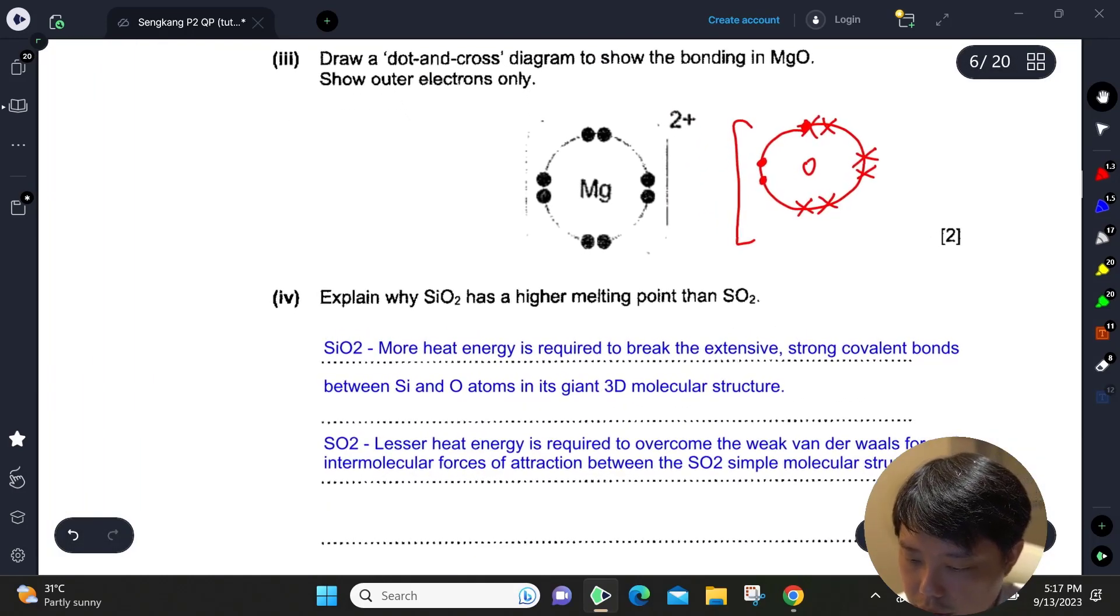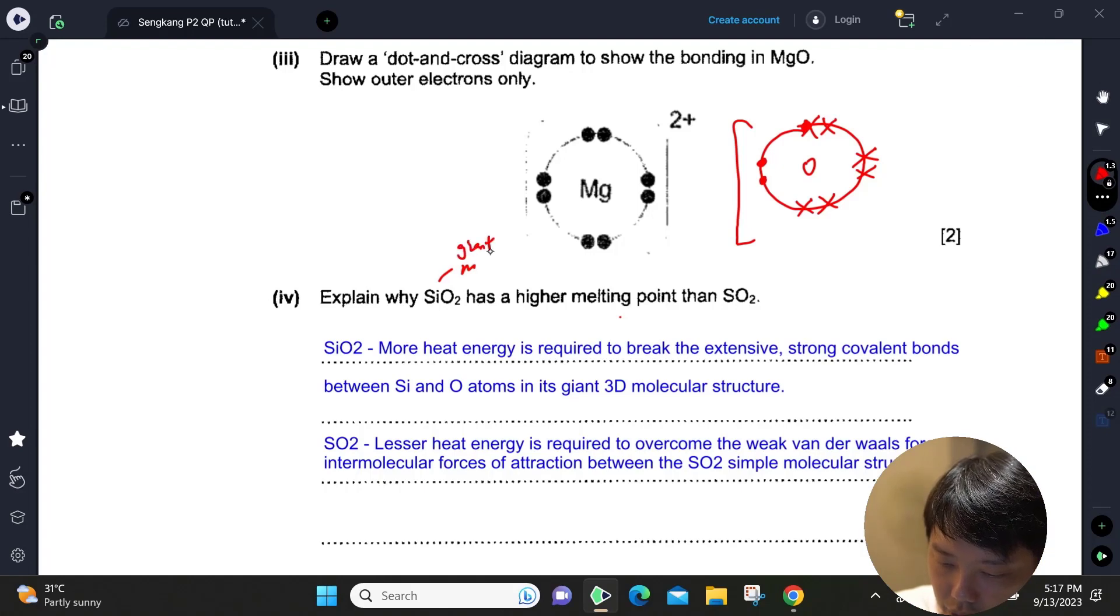Next question: why does silicon dioxide have a higher melting point than sulfur dioxide? Silicon dioxide is a giant molecular structure, so definitely a lot of energy is required to break the strong, extensive covalent bonds in the giant 3D structure.